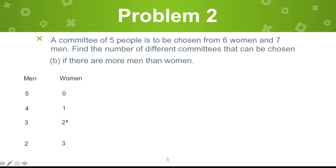Is 5 men, 0 women a possibility? Yes, because there are more men than women. What about 4 and 1? Yes, 4 is greater than 1. And 3 and 2 — also a possibility. What about 2 men and 3 women? Even though the total is 5, there are fewer men than women, so that won't be counted. So one strategy is to list possibilities and eliminate whatever doesn't satisfy the condition.